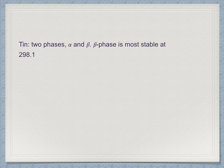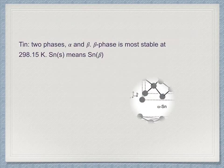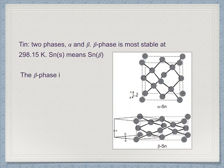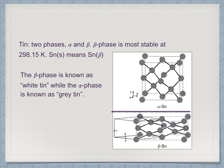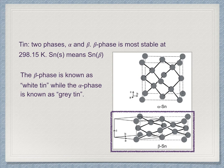Tin has two allotropes called alpha tin and beta tin. Beta tin is the most stable allotrope, also known as white tin, and is its reference state. Though if we consider processes at much lower temperatures, alpha tin would become the reference state as it becomes more stable. But at 298.15 Kelvin, it is beta tin.